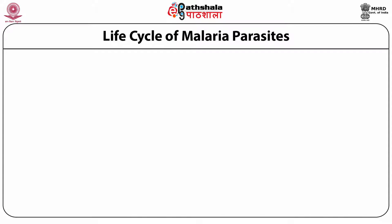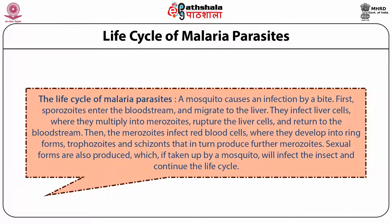The life cycle of malaria parasites begins with a mosquito bite. Sporozoites enter the bloodstream and migrate to the liver, where they infect liver cells and multiply into merozoites, rupture the liver cells, and return to the bloodstream. The merozoites then infect red blood cells, where they develop into ring forms, trophozoites and schizonts that in turn produce further merozoites. Sexual forms are also produced which, if taken up by a mosquito, will infect the insect and continue the life cycle.